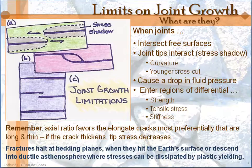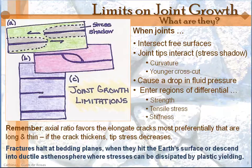When your joint or fracture is going to enter a region of differential stress, different tensile stress, different strength, different stiffness — all of those things can serve to either speed up the propagation, halt it, or slow it. For instance, if it sinks into the ductile asthenosphere, then the plastic yielding is going to dissipate the force and the stress and it's not going to propagate anymore. It's kind of like a brittle fracture moving into silly putty or clay — that's not going to act the same anymore.